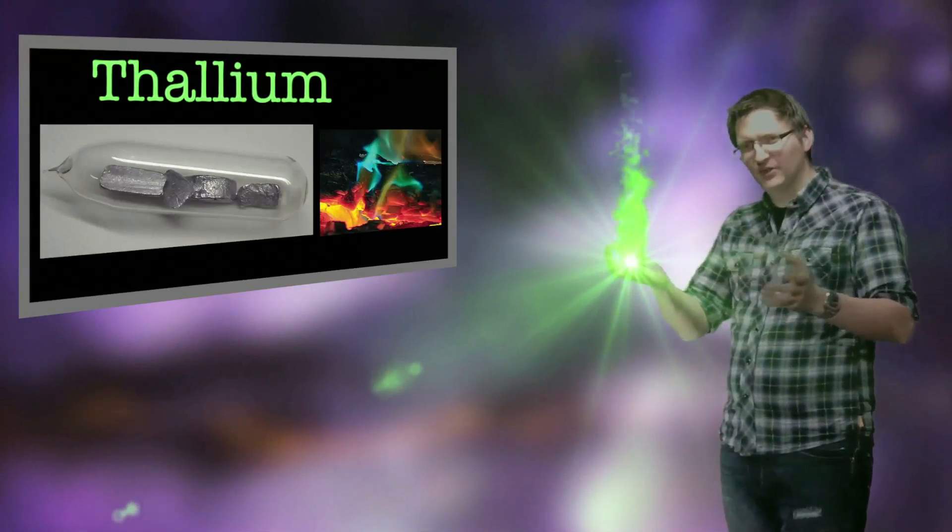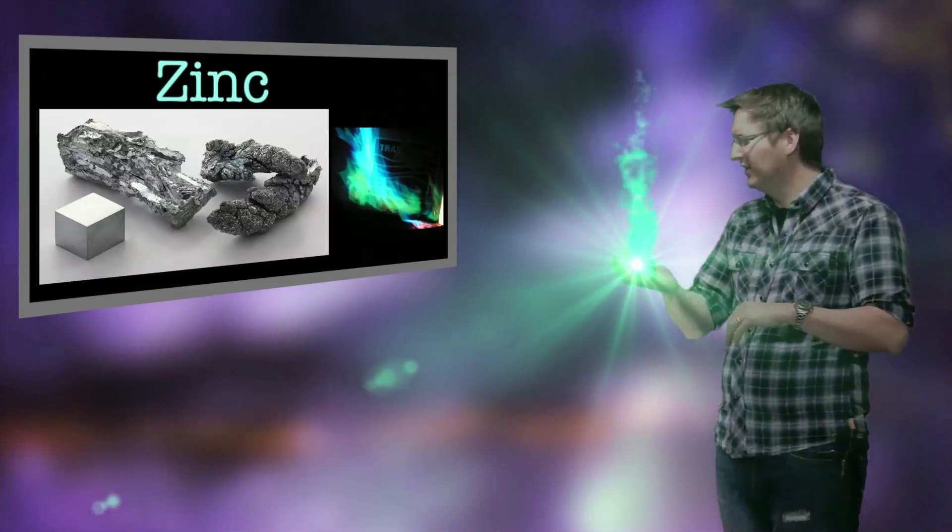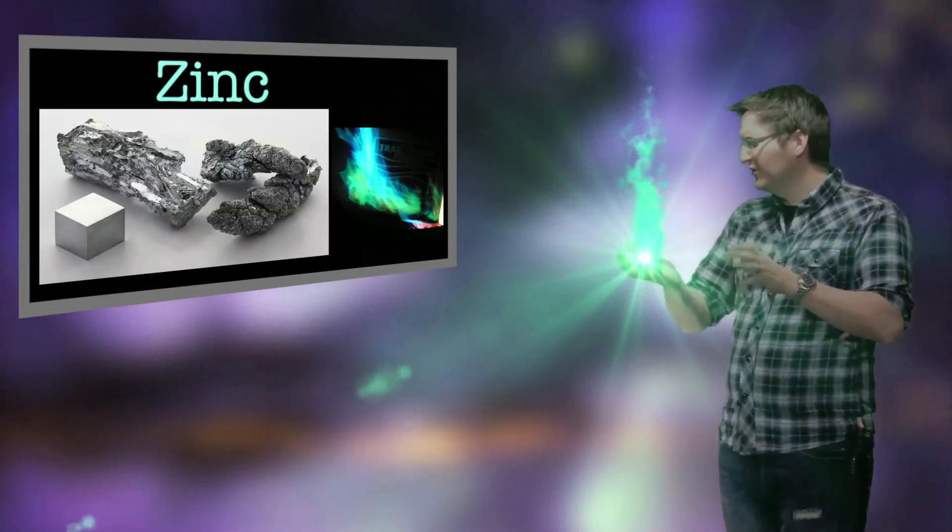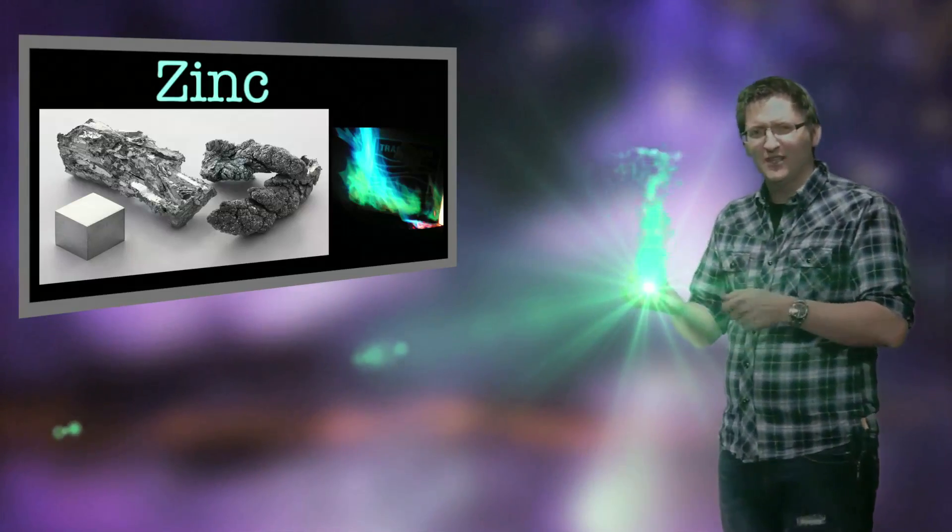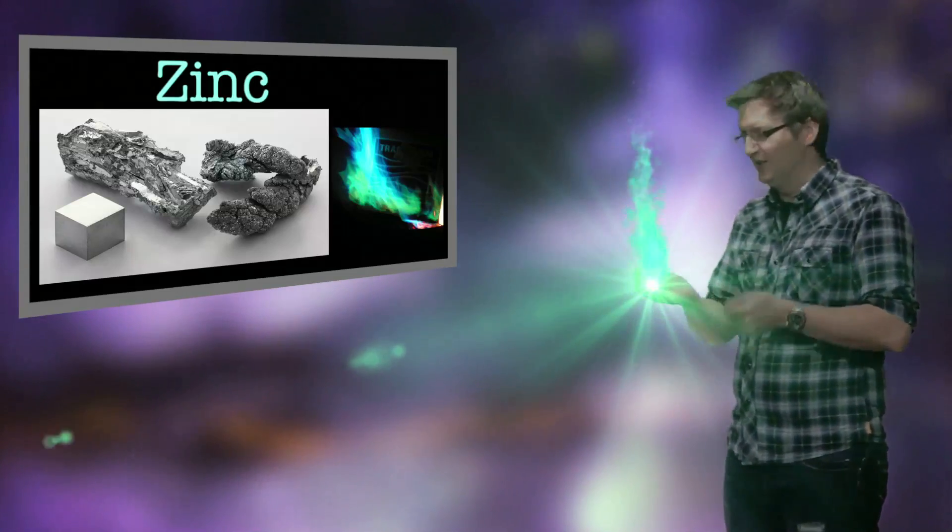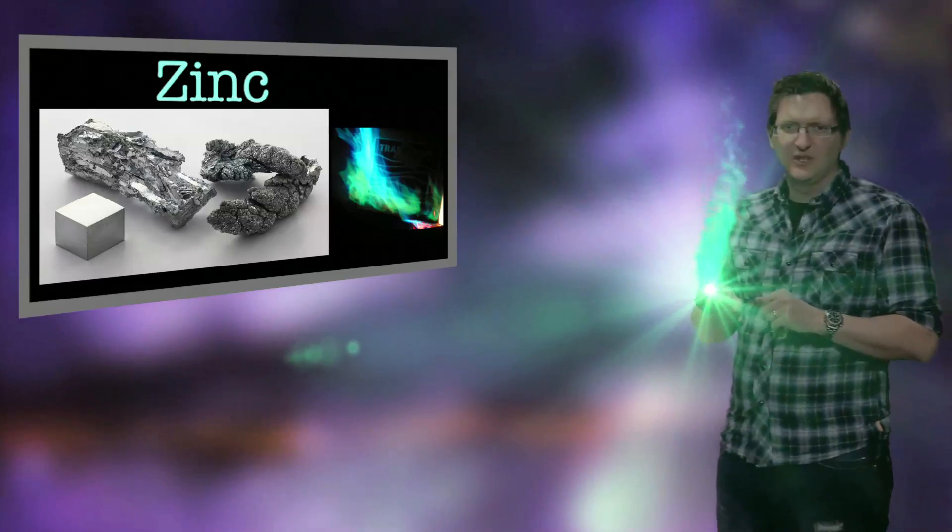And then I'll end it with zinc. Zinc's got like a bluish green color, which is not too dissimilar to what we saw for phosphorus. So you'd have to get a sample of phosphorus and zinc to actually distinguish between the two there.